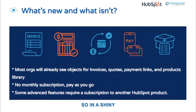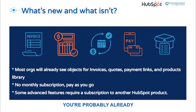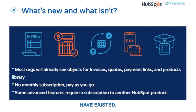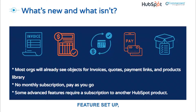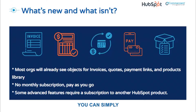In this shiny new HubSpot feature, you may recognize some of the components that allow you to create new record types. You're probably already familiar with quotes, payment links, and the products library. Before Commerce Hub existed, you could add products to a deal and/or a quote. And if you had the payments feature set up, you could accept payments through your quote. Now, with the invoice object, you can simply convert your quote into an invoice directly in HubSpot.